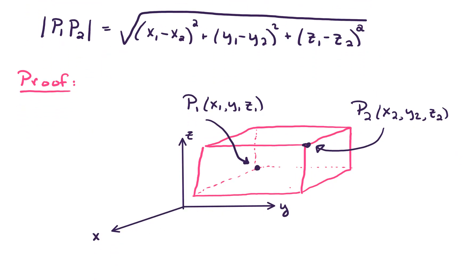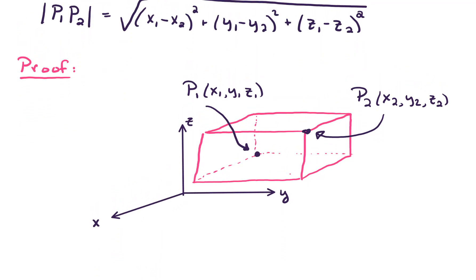So to begin the proof, I've drawn a rectangular prism again to help visualize where P1 and P2 are in 3-space. Let's also label some other corners. I'm going to label this front corner here point A. Point A has the same